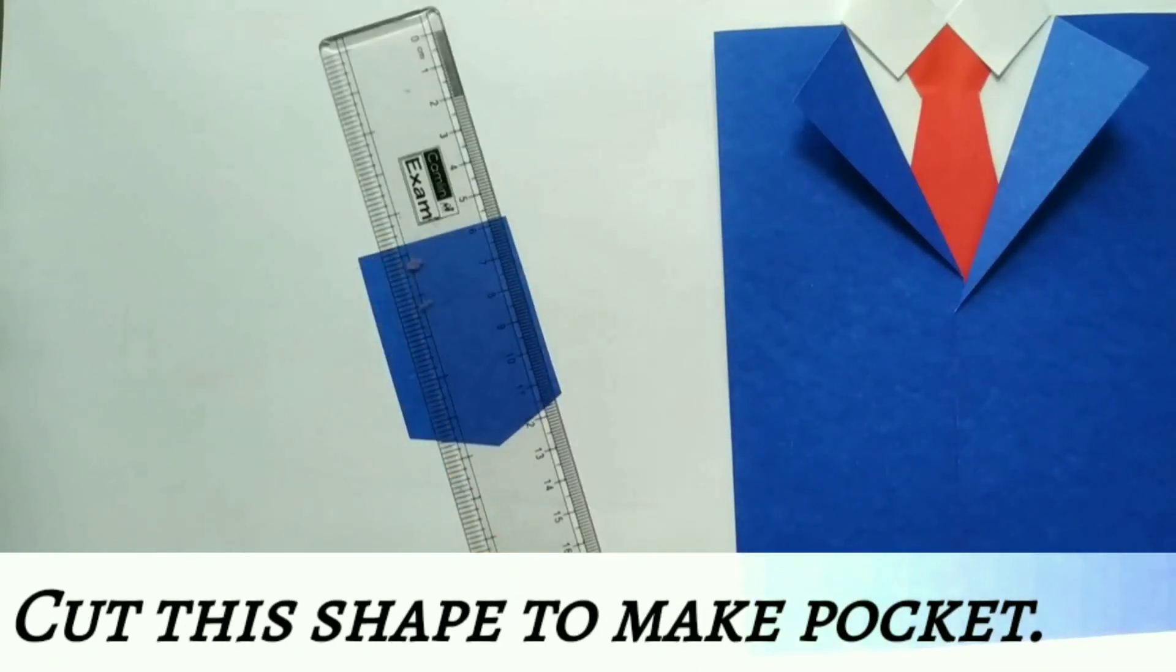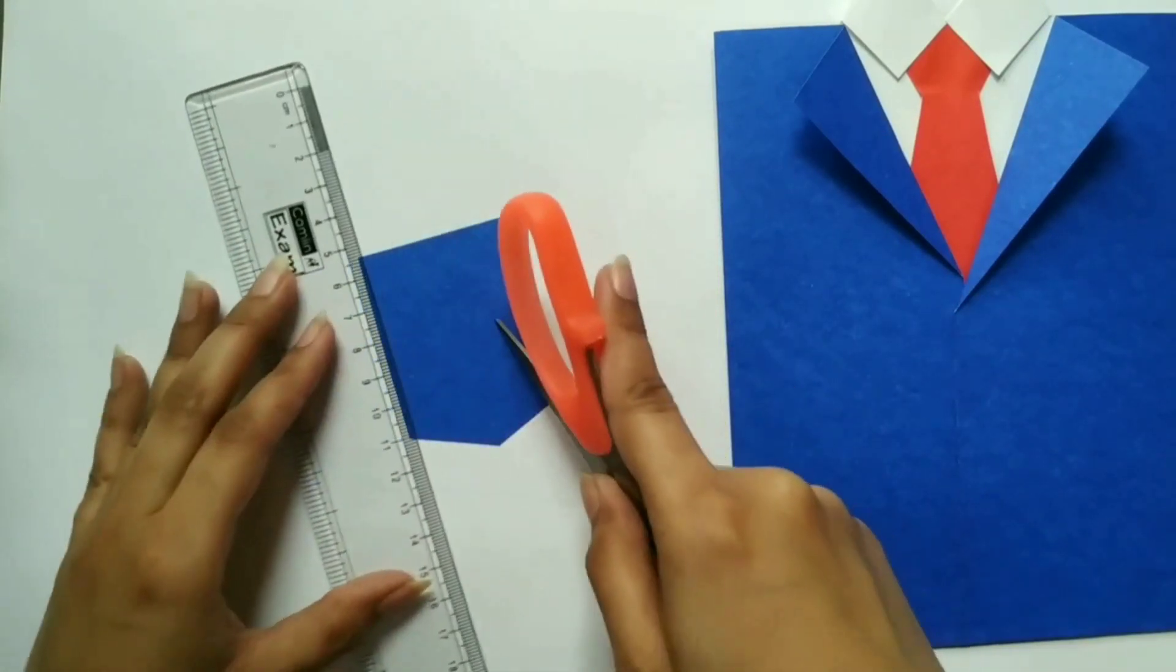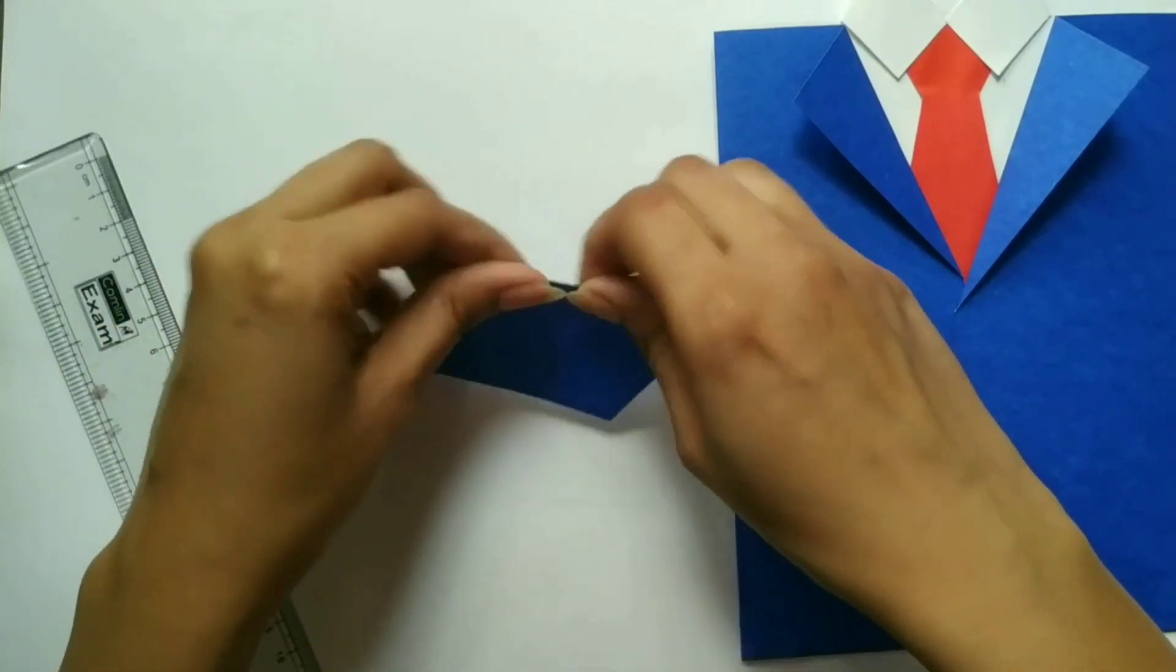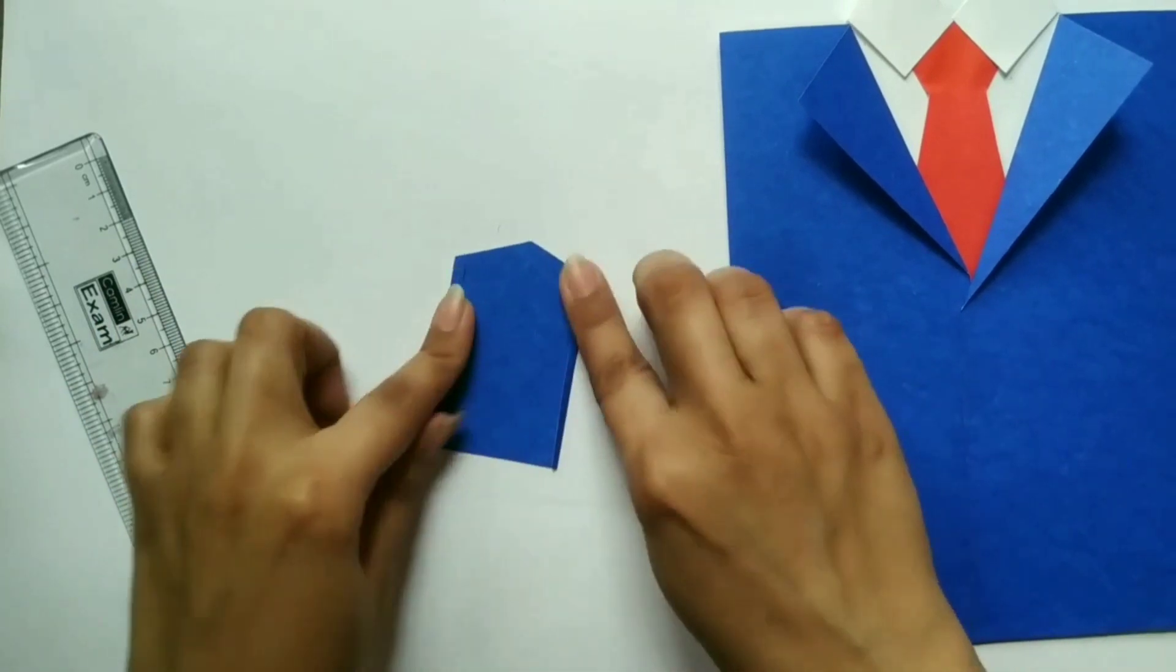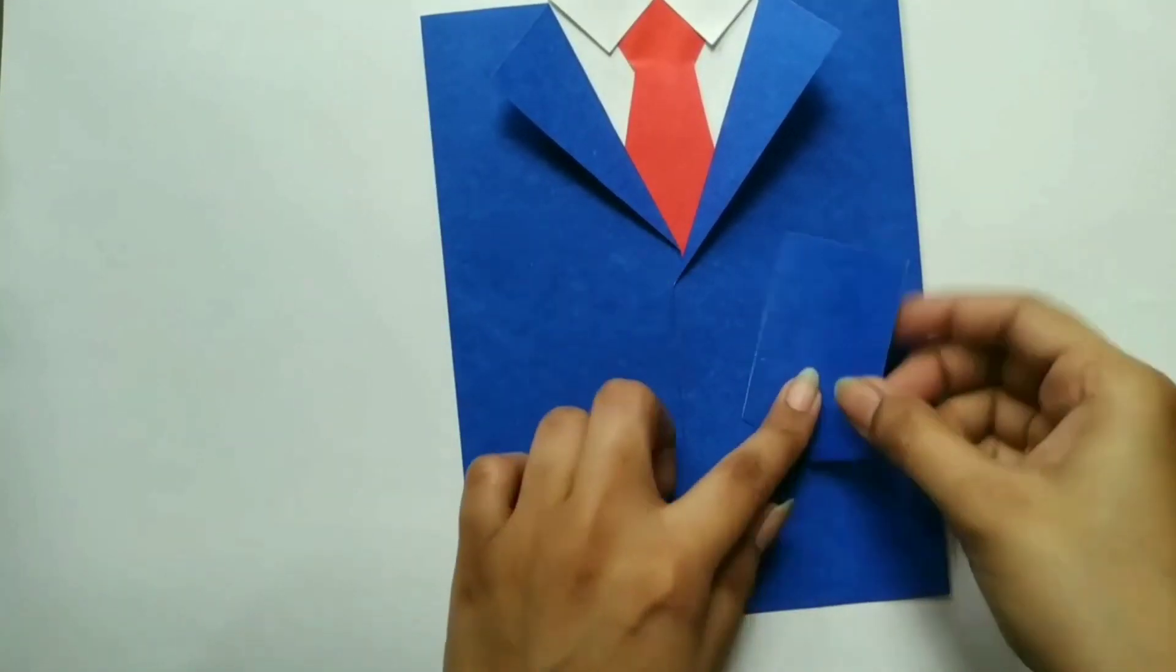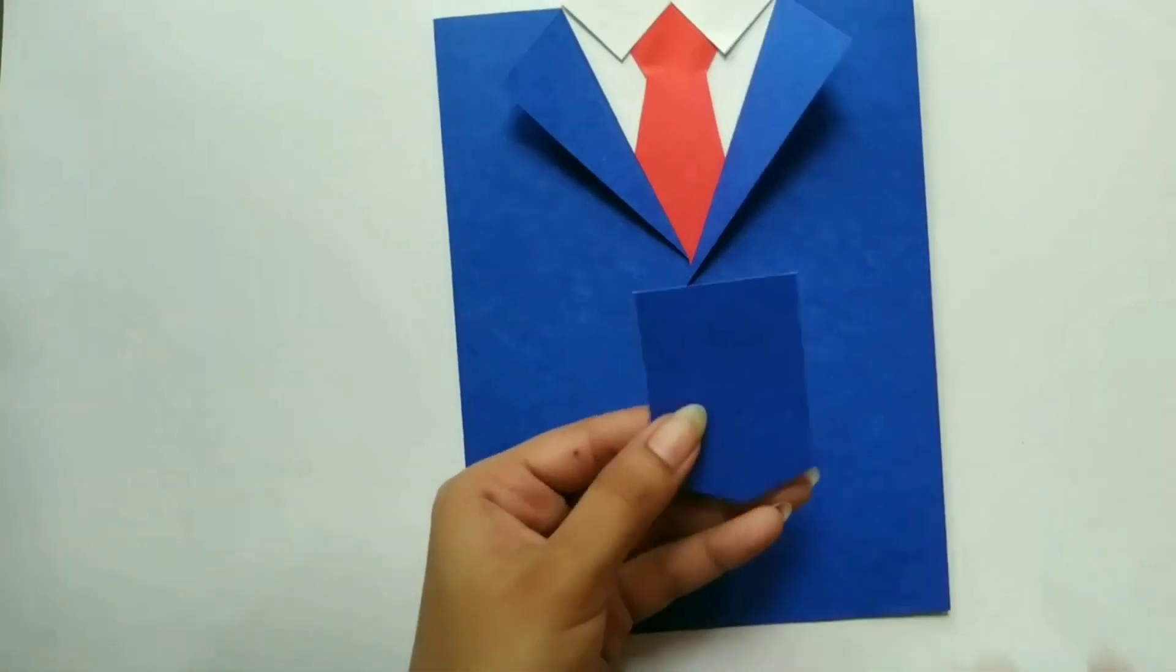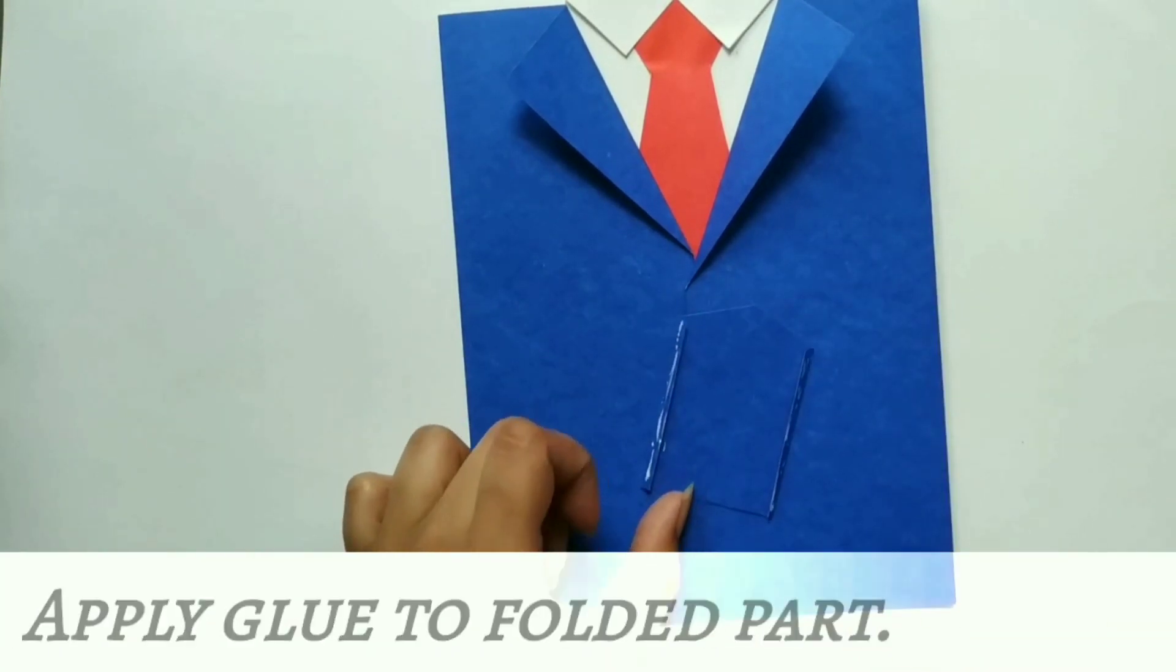Cut the shape to make the pocket for the blazer. Score this pocket from the sides and fold it. Apply glue to the folded part to paste this pocket.